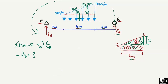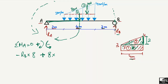The rectangular load of 8 kN creates a clockwise moment about point A, so it is positive. The moment arm is the distance from the midpoint of the rectangular load to point A. The 4-meter load starts at 2 meters from A, and its midpoint is at 2 meters into the load, giving a total moment arm of 2 + 2 = 4 meters. So it is plus 8 kN times 4 m.